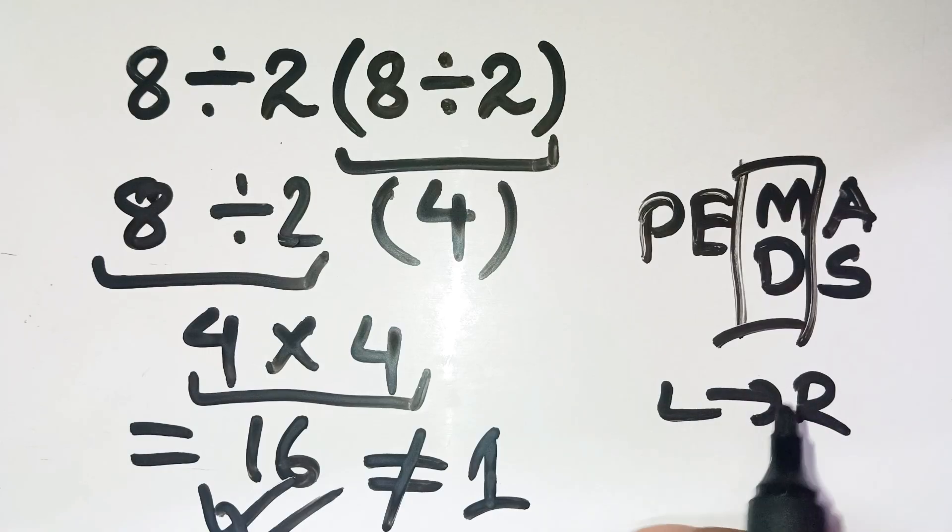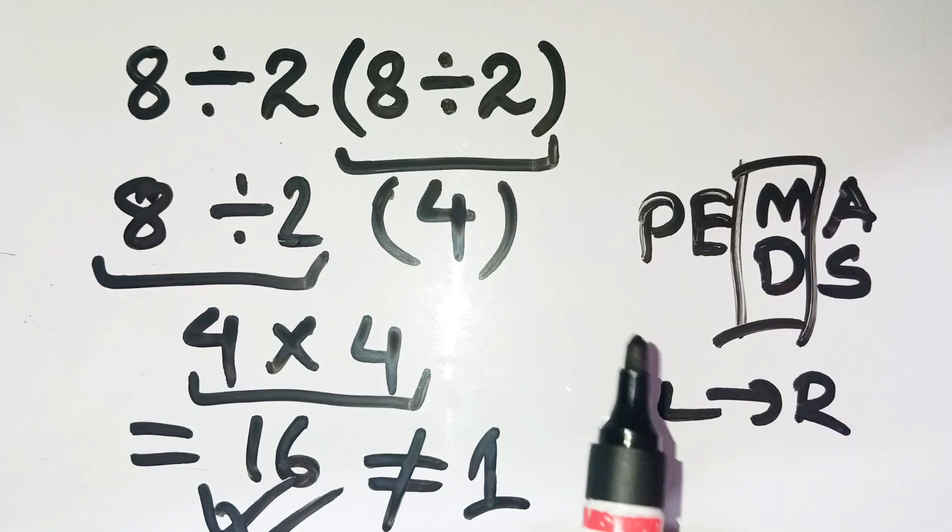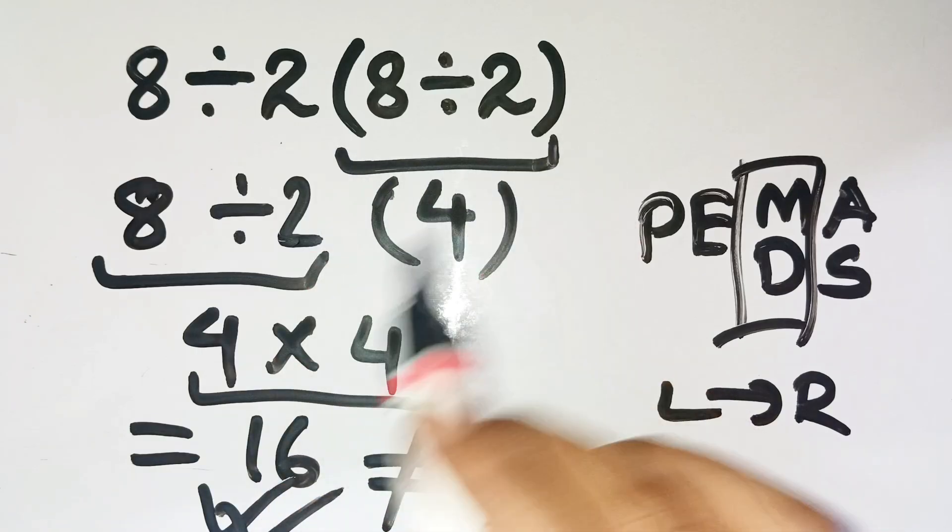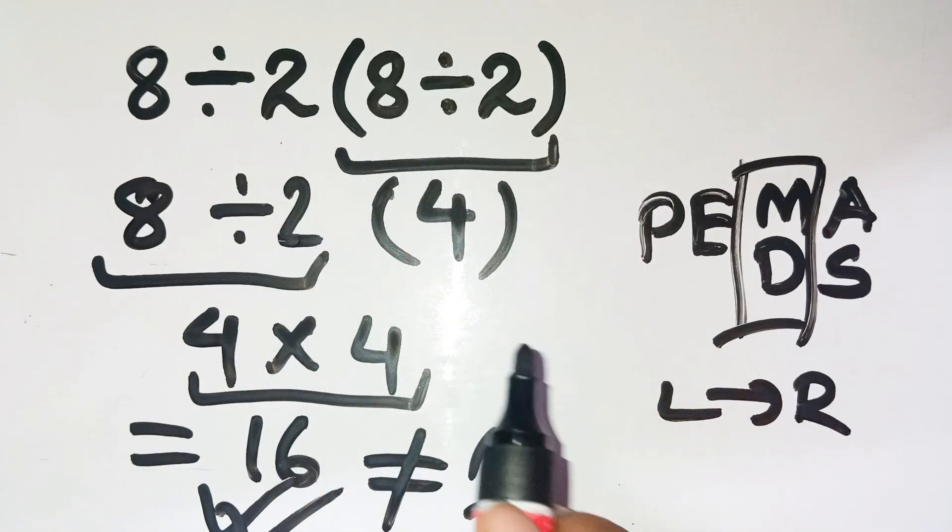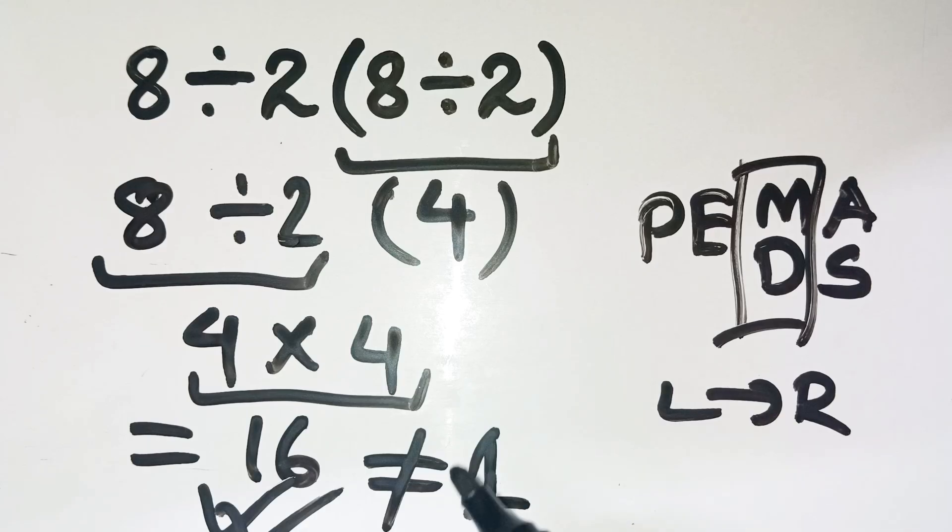So always remember, left to right still matters. The expression 8 divided by 2 parentheses 8 divided by 2 looks like it should collapse to 1, but it actually climbs up to 16 when done correctly. So the correct answer is 16, not 1.